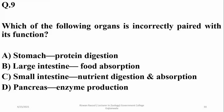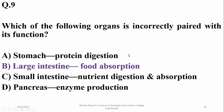Which of the following organ is incorrectly paired with its function? The stomach is involved in partial digestion of proteins; the large intestine is concerned with absorption of water and minerals, not food; the small intestine is involved in nutrient digestion as well as absorption; and the pancreas is concerned with enzyme production. So the right option is beta — that is not a suitable matching.